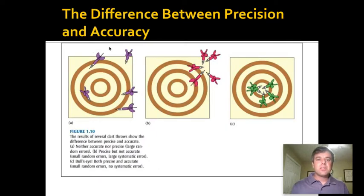This kind of shows a representation of this. If you're trying to hit the bullseye on a dartboard: this is neither accurate nor precise, this is fairly precise but you've missed the mark, and then this is both precise and accurate.